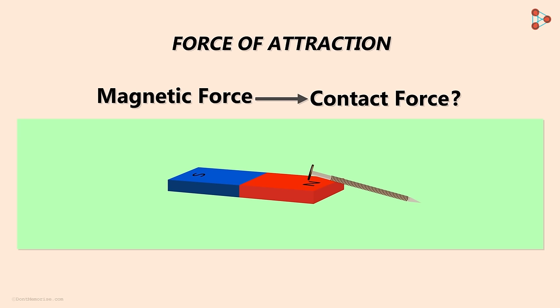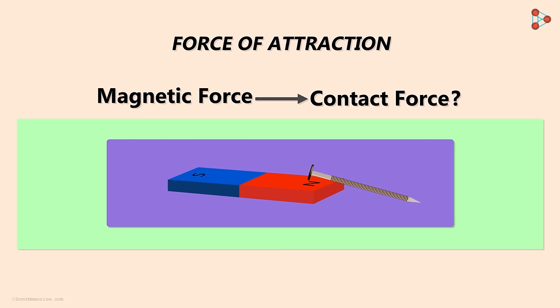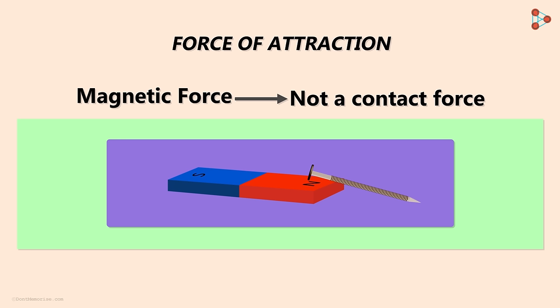It means the force came into action even when there was no contact between the magnet and the nail. Hence we can say that a magnetic force is not a contact force. Contact is not necessary for the magnetic force to work on the nail.